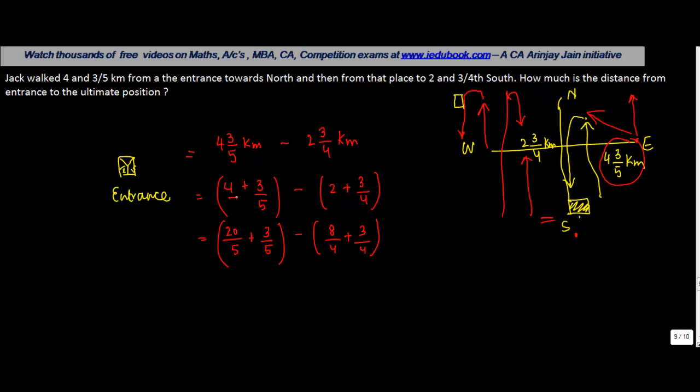Now, 4 can also be written as 20 upon 5 plus 3 upon 5, minus 2 can be written as 8 upon 4 plus 3 upon 4. So we have just converted the denominator of these two into equivalent denominator. So for these two, 5 will be the common denominator and then we add the numerators 20 plus 3, 23 upon 5 minus, for this 4 is the common denominator, we do 8 plus 3. So this becomes 23 upon 5 minus 11 upon 4.